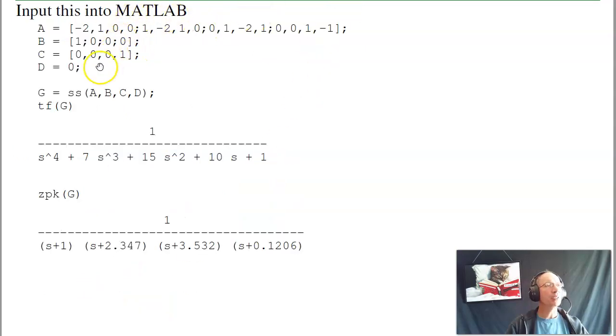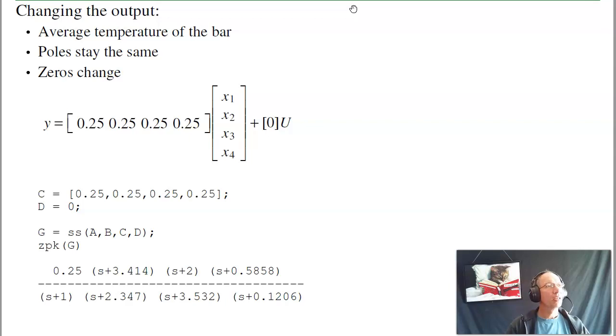In MATLAB, input the ABCD matrix stored in state space form. Now find the transfer function, or actually what's more useful is the zeros, poles, and gain. What this tells you is the dominant pole, right here. That tells you it's a real pole, so there's no overshoot, no oscillations. And the settling time will be 4 over 0.12, about 32 seconds.